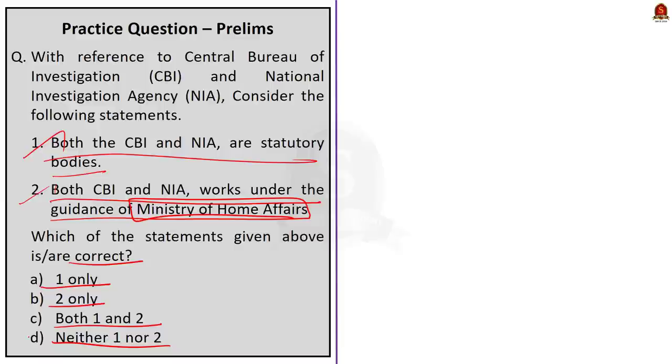See the correct answer for the question is option D neither one nor two. Statement 1 is incorrect because only NIA is a statutory body. CBI is created by an executive order. We saw that in the discussion itself right? Now the second statement is also incorrect because CBI comes under Ministry of Personnel, Pensions and Grievance Redressal while only NIA comes under Home Ministry. So the second statement is also incorrect. So the correct answer for the question is option D neither one nor two.